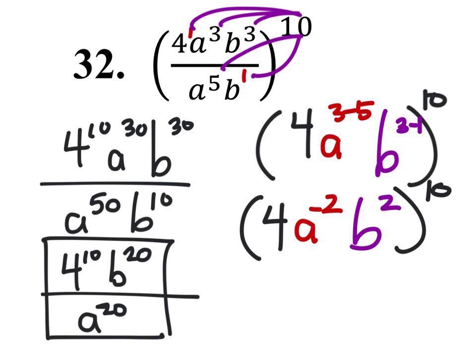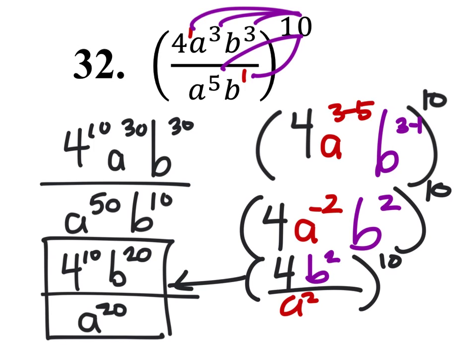The negative 2 for the power of a gives us a fraction there. So we've got 4 over a squared, and b squared to the power of 10. Now when we distribute the 10, we get the same answer as before.